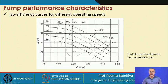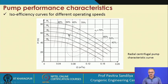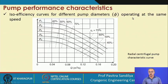Here we have another presentation — isoefficiency curves for different operating speeds. We again plot head versus flow rate, but now for different operating speeds. The contours labeled 40%, 50%, etc. represent lines of the same (iso) efficiency, drawn for different flow rates — also for a centrifugal pump. Similarly, isoefficiency curves for different pump diameters operating at the same speed are plotted with various efficiency contours. We shall see later how to use these characteristic curves in determining the performance of a pump.